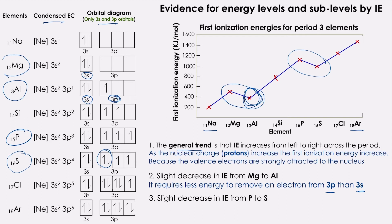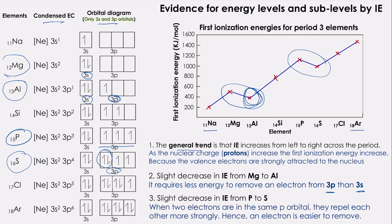If we compare that with phosphorus, we don't have any two electrons in the same orbital, which means that it is more stable. The 3P in phosphorus is much more stable than the 3P in sulfur. When two electrons are in the same P orbital, they repel each other more strongly, so an electron is easier to remove in the case of sulfur. This is the reason behind the slight decrease in the ionization energy from phosphorus to sulfur.